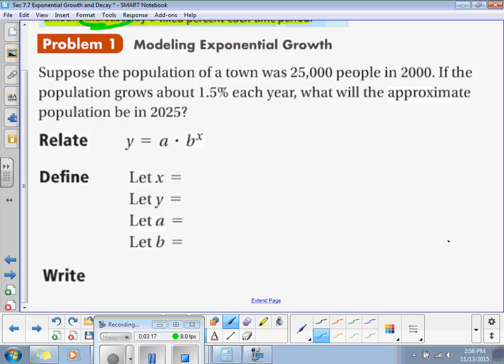Remember, x is our time. X is time. That's our independent variable. So, since we're going from 2000 to 2025, x is equal to 25 years.